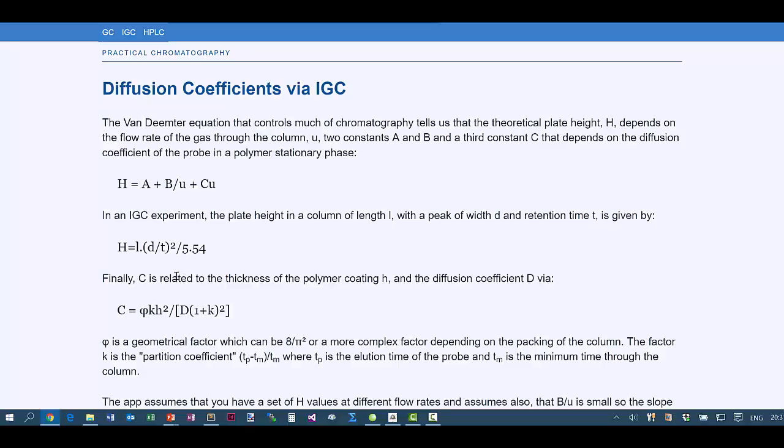Finally, C is related to the thickness of the polymer coating H and the diffusion coefficient D via this equation, where phi is a geometrical factor, which for spherical packing is 8 over pi squared, or around 0.8. And there's a partition coefficient K, which is found from this ratio.